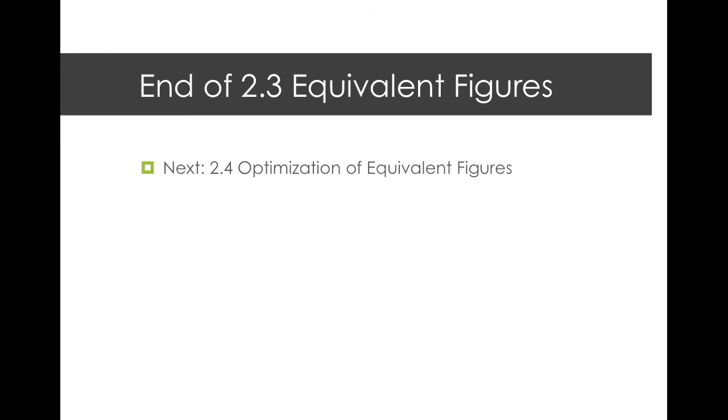And that is the end of 2.3 on equivalent figures. Up next, we're going to talk about optimization again, but this time it's of equivalent figures.